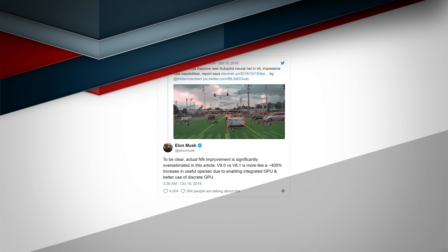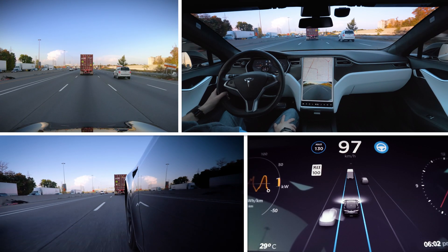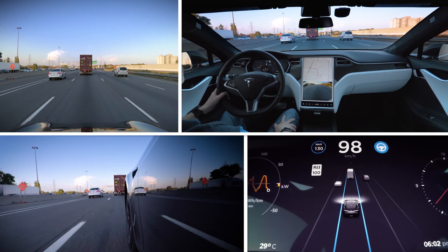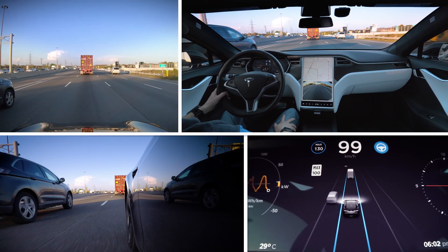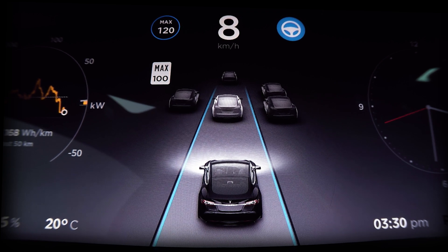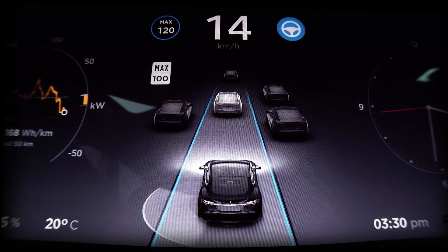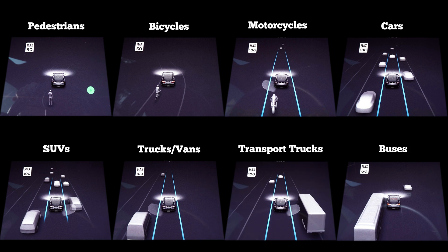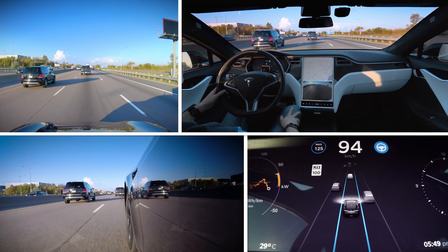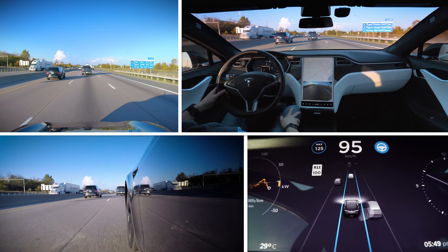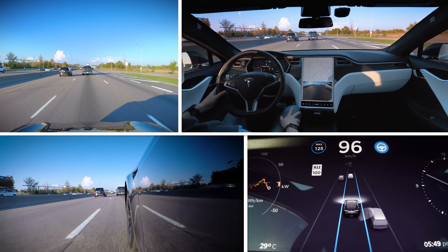One of the first things you'll notice is that Autopilot in version 9 is capable of using its advanced neural network to render many different types of objects in the display. The previous version would render all objects as a generic car, but the new system is capable of distinguishing pedestrians, bicyclists, motorcycles, cars, SUVs, vans and light trucks, transport trucks, and buses. Version 8.1 could see cars in front of the car ahead of you, but it seems to be able to see much farther ahead in version 9, and can even determine the type of vehicle two cars ahead.